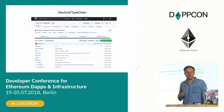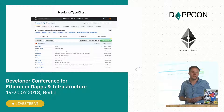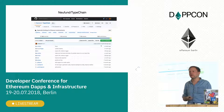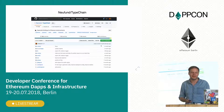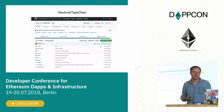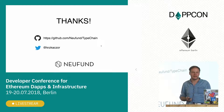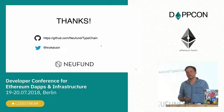TypeChain is fully open source, available on GitHub, and has gotten pretty good traction — at least two startups other than Neufand are using it. We've gotten some nice community contributions; for example, event support was only partially implemented because we didn't really need it, but someone who did went ahead and added it. Feel free to check it out on GitHub. This is my Twitter — you can follow me. And that's it, thank you!